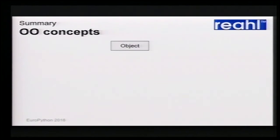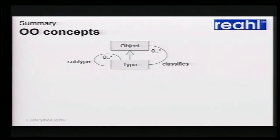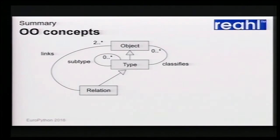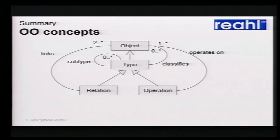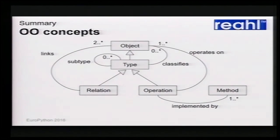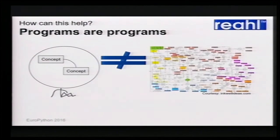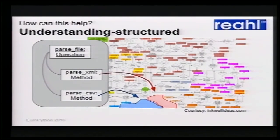A quick summary of what we've covered so far. Let's say that we'll call anything in the world an object. A subset of those things are called types or concepts. Types are special because they can have subtypes and they classify other objects. A special kind of type is a relation, and relations link objects together. Another special kind of type is an operation, which operates on a bunch of objects and gets implemented by a number of different methods. But you can sit with a head full of concepts — how does that help you? Because you still have this spaghetti bowl of code lying somewhere. How does this help us?